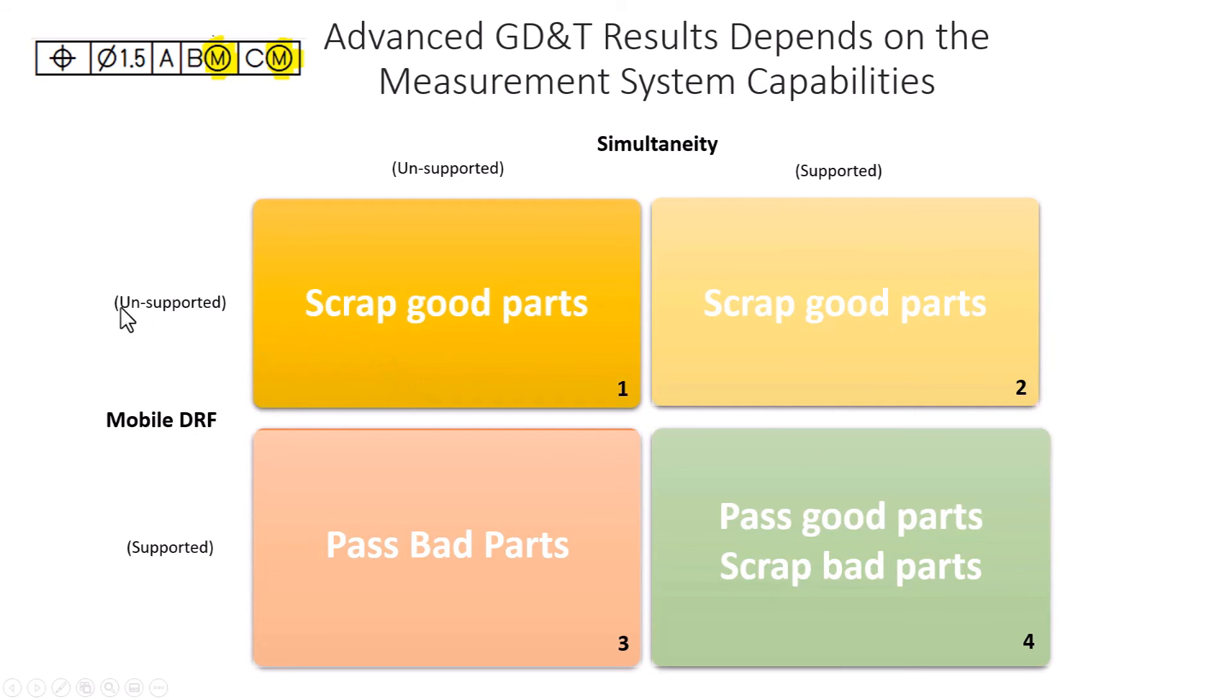these four quadrants will give us an idea of what's going on. So let's take position one. We have an unsupported mobile reference frame. In other words, it's not able to calculate on those two things.